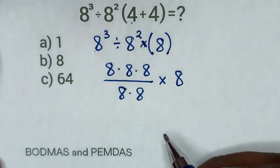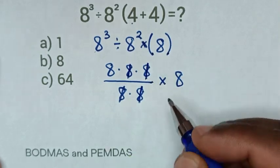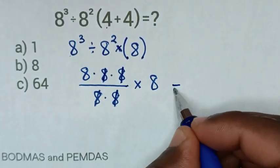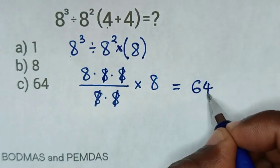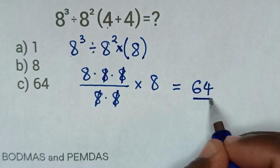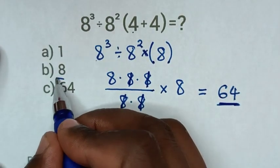Now to simplify this, 8 over 8 will cancel, 8 over 8 will cancel. So it will be equal to 8 times 8 is 64. So this is the correct answer. Selecting the multiple choice, it is c.